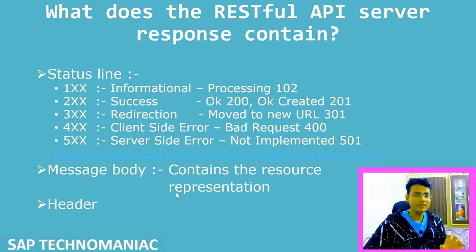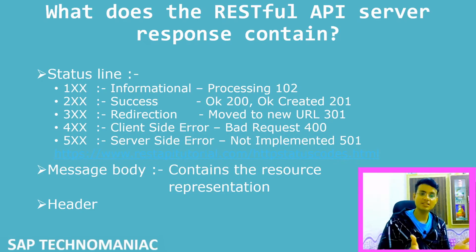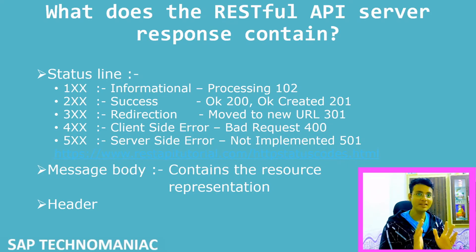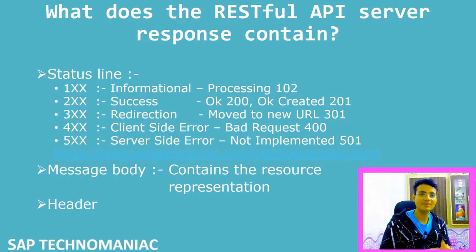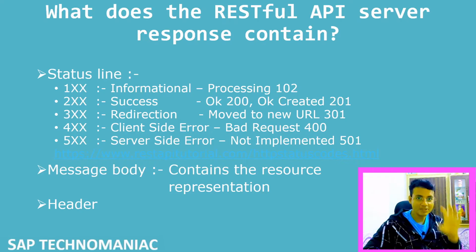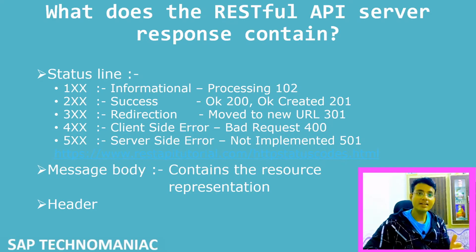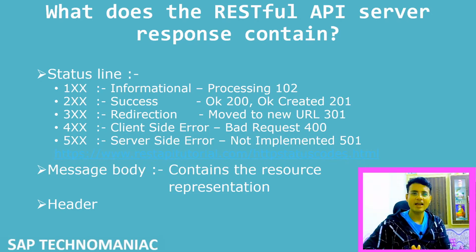Apart from the response code, we will also get a message body as part of the response, which will have the representation of the resources. We will not have the actual resources — those reside in the server. We will have a representation of our resources that we can work with, and it should contain enough information. That is the RESTful API principle — whatever information we get from the server should be enough so we can work with that data. Apart from that, there is also a response header which will give extra detail from the server — like what kind of data you got, how much data you got, and what format it is in.